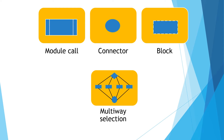Suppose you are drawing a flowchart and it is not completed on one page, so you continue on the next page. On the previous page, you draw the connector and name it A, B, C, or whatever. Then again on the next page, draw the connector and give the same name. This indicates the continuation of your flowchart.